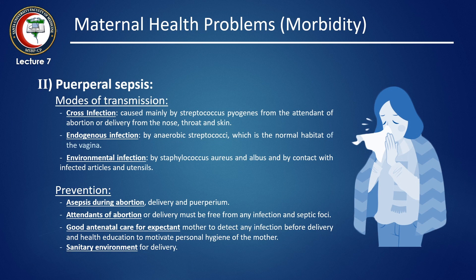The modes of transmission in detail: Cross infection — Streptococcus pyogenes is transferred from attendants at abortion or delivery via their noses, throats, and skin lesions. Endogenous infection is caused mainly by anaerobic streptococci, which are the normal inhabitants of the vagina. Environmental infection is caused mainly by Staphylococcus aureus and albus, transmitted by contact with infected articles.